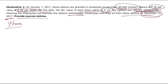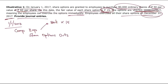Journal entry on January 1, 2017: Since options vest immediately, we recognize the total compensation expense in full. Debit compensation expense and credit share options outstanding. The amount is 80,000 share options times 15 pesos (fair value) equals 1.2 million pesos. Note that compensation expense affects net income, while share options outstanding is part of total share premium.